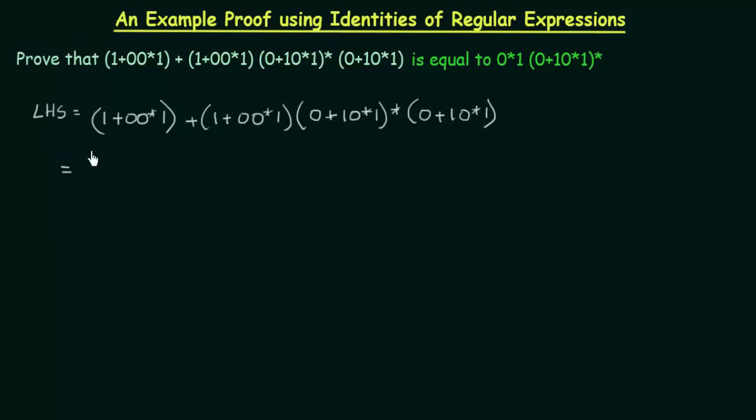Now if you see here, you see that this term 1+00*1 is repeated here. We see that here we have this term, here also we have this term. So what I can do? I can take this as a common. Let me take this as common: (1+00*1).